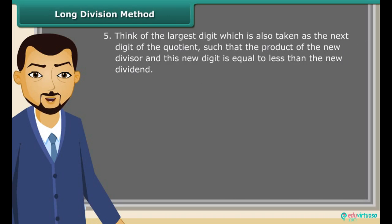Next, think of the largest digit which is also taken as the next digit of the quotient, such that the product of the new divisor and this new digit is equal to or less than the new dividend. Here we have 124 multiplied by 4 equal to 496. Since the remainder is 0, the square root of 4096 is 64.